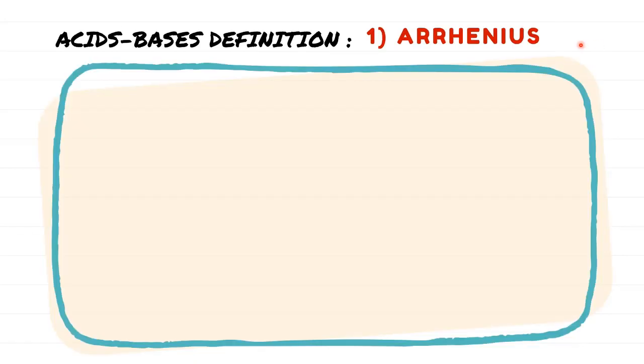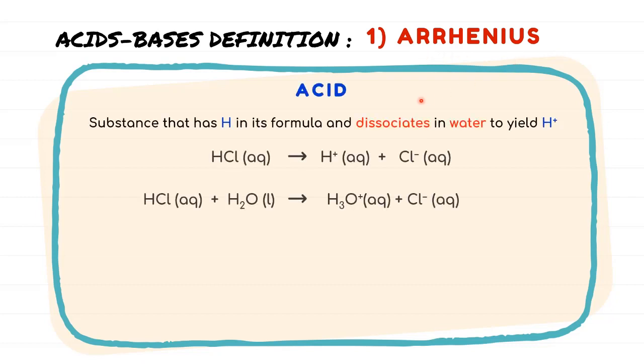There are 3 definitions you need to know for acids and bases. The first definition is proposed by Arrhenius. According to Arrhenius, acid is a substance that has hydrogen in its formula and dissociates in water to yield H+. From this example, we are interested in hydrochloric acid, HCl.